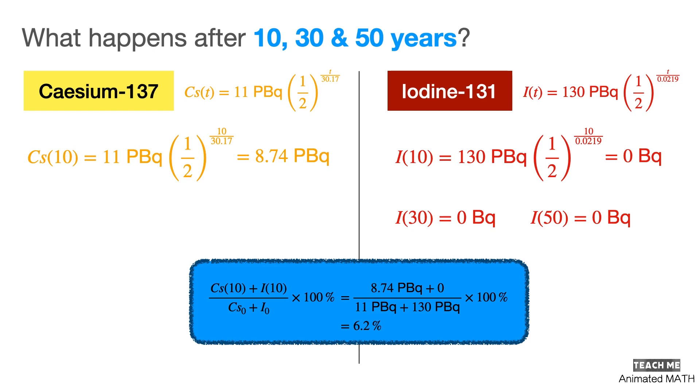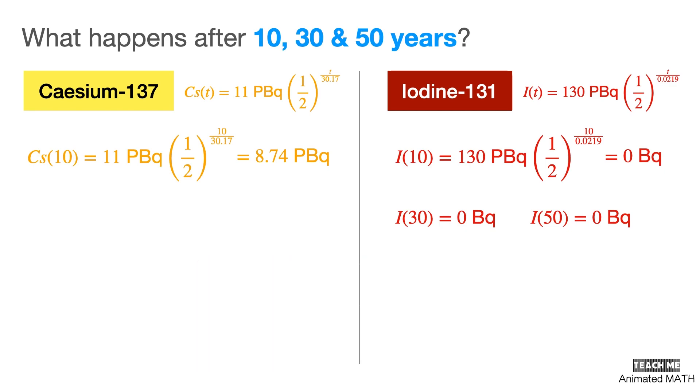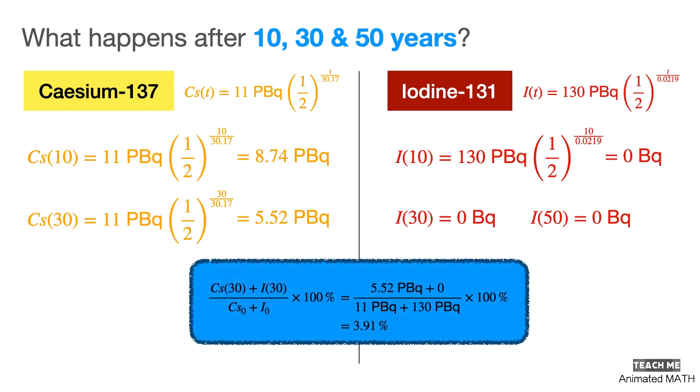Let's proceed by computing the amount of cesium-137 remaining after 30 and 50 years. After 30 years, 5.52 peta-becquerels would remain, which means that the off-limits zone will get smaller, and some of the evacuees can probably live at their old homes since only 3.91% of the original radioactive materials remain.